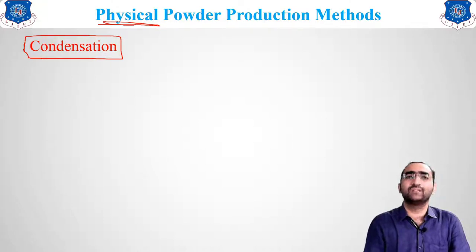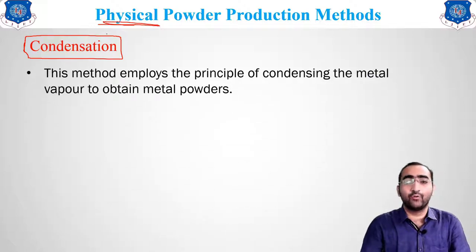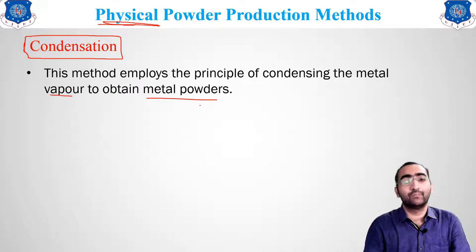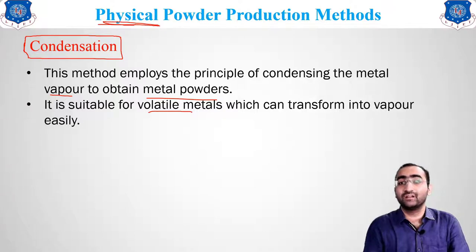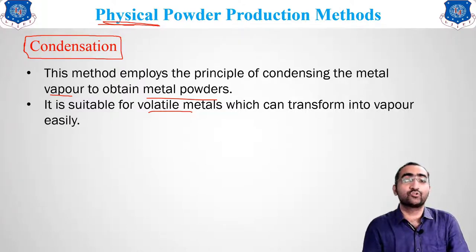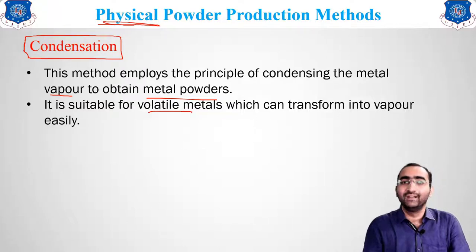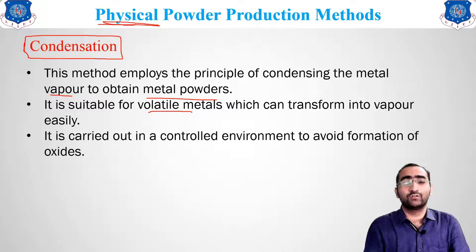The condensation method employs the principle of condensing metal vapor to obtain metal powder. This method is suitable for volatile metals which are easily transformed into vapor. Metals generally have very high boiling points, so this method is not economical for all metals. It can only be used for metals whose boiling point is sufficiently low. It is carried out in a controlled atmosphere to avoid the formation of oxides — without a controlled atmosphere, the metal would react with oxygen, forming oxides.